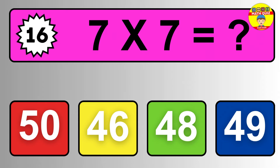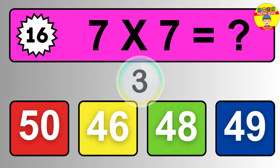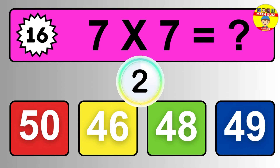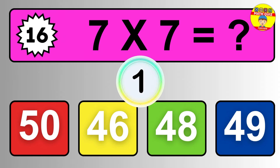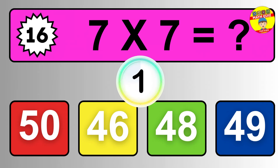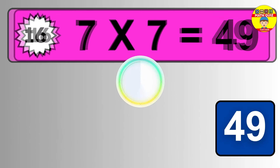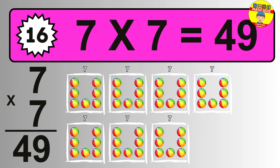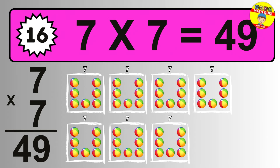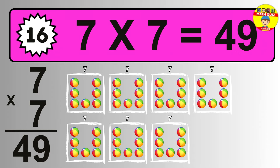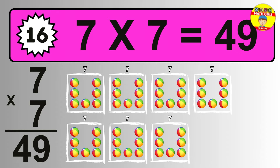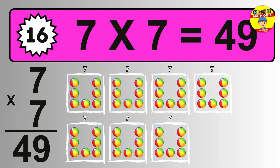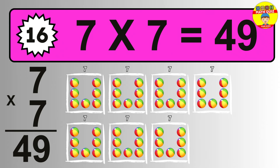Question sixteen. Seven times seven equals what? The answer is seven times seven is 49. To calculate, we have seven groups with seven balls each one. So how many balls do we have? 49 balls.